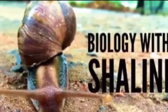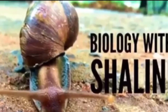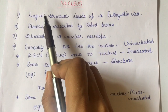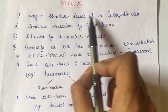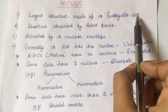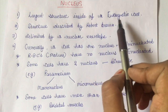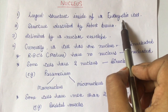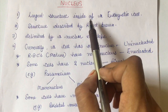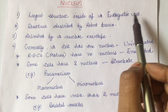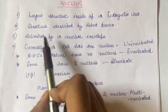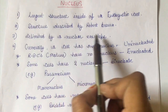Hello everyone, welcome back to another tutorial from Biology with Shalini. In this tutorial we are going to talk about the nucleus. The nucleus is the largest organelle present inside a eukaryotic cell, where 'eu' means true and 'karyotic' is derived from 'karyon' meaning nucleus. Its structure was described by Robert Brown, and it is delimited by a nuclear envelope.